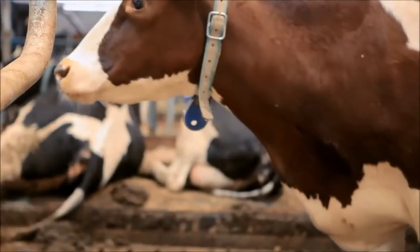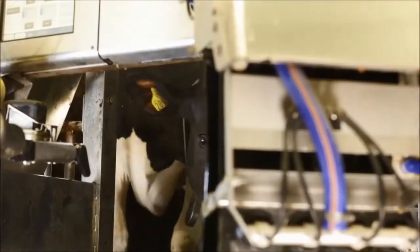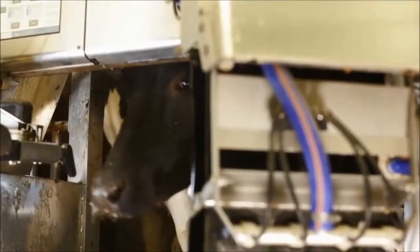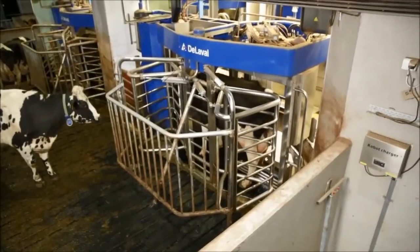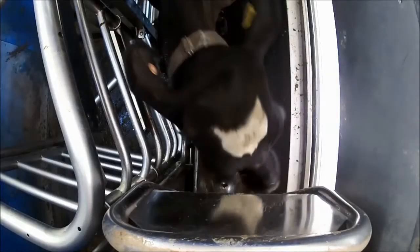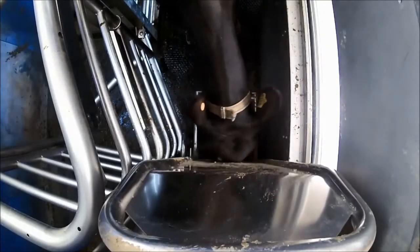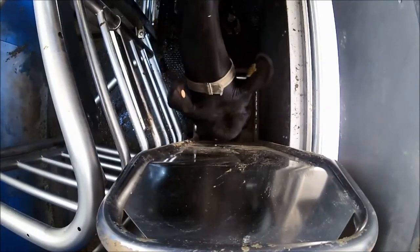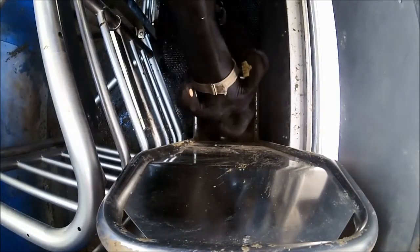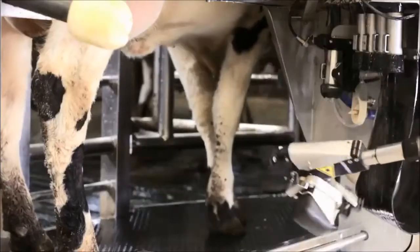The cow is identified by the system and granted milking permission. The feed manager automatically adjusts to each cow's length, keeping her comfortable before gradually dispensing feed during milking.